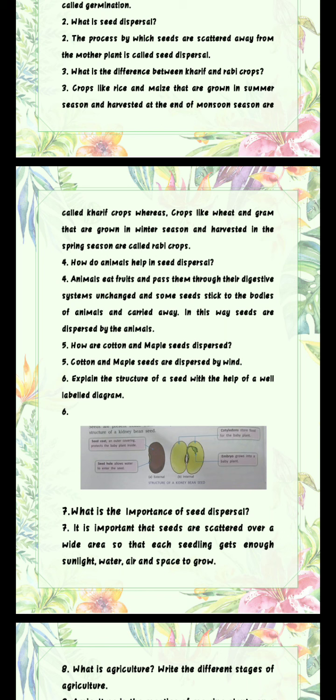Question 4: How do animals help in seed dispersal? Answer: Animals eat fruits and pass them through their digestive systems unchanged, and some seeds stick to the bodies of animals and are carried away. In this way seeds are dispersed by animals. Question 5: How are cotton and maple seeds dispersed? Answer: Cotton and maple seeds are dispersed by wind.